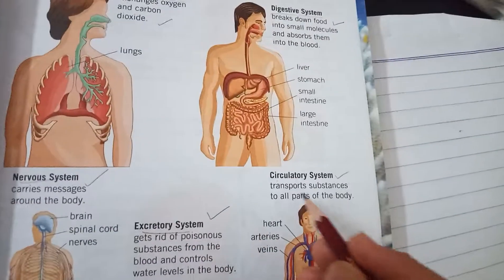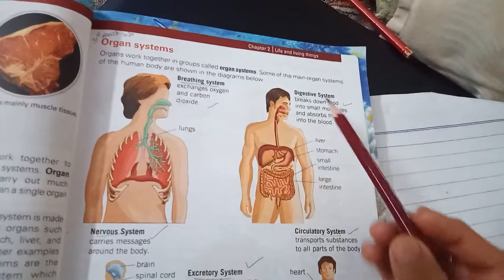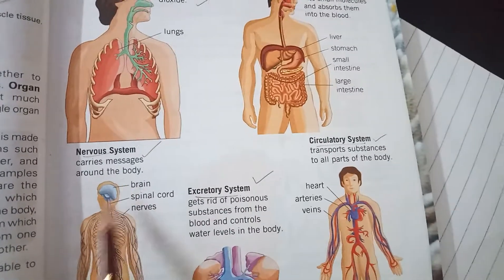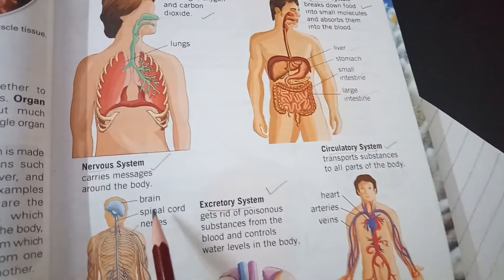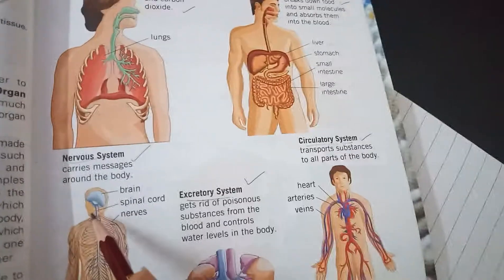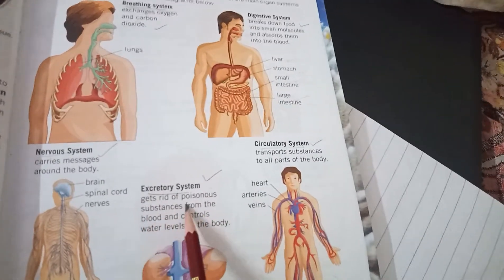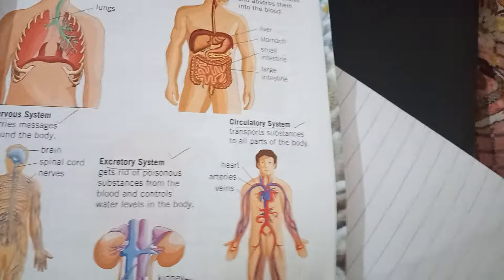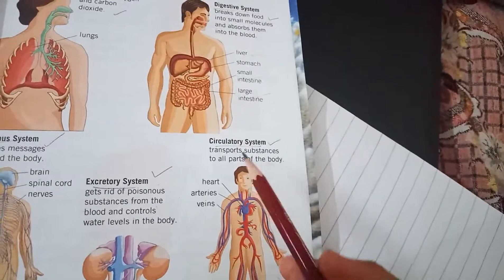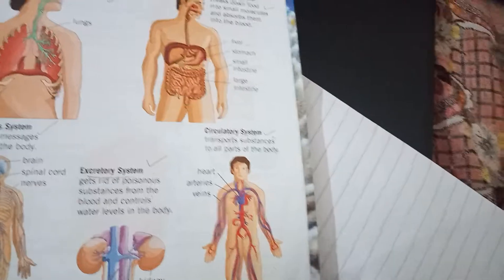The organ systems are: the breathing system, digestive system, nervous system, excretory system, and circulatory system. The breathing system helps us take in oxygen and release carbon dioxide. The digestive system digests food using the liver, stomach, small intestine, and large intestine. The nervous system depends on the brain, spinal cord, and nerves to carry messages. The excretory system removes poisonous substances from the blood and controls water levels through the kidneys, bladder, and ureter. The circulatory system supplies blood to the whole body.